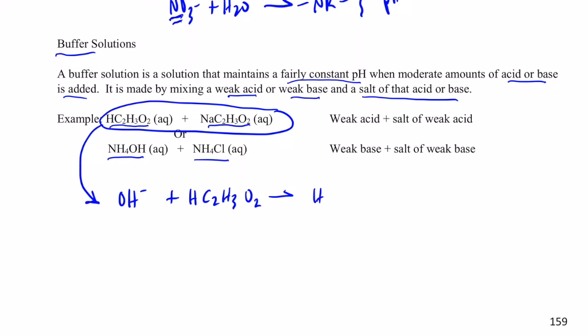The OH-s would react with the acetic acid to neutralize it. You'd form H2O, and you'd have these acetate ions. So the OH-s would be gobbled up, so to speak, by the weak acid. So the pH would not be affected too dramatically by the addition of a base to that buffer.